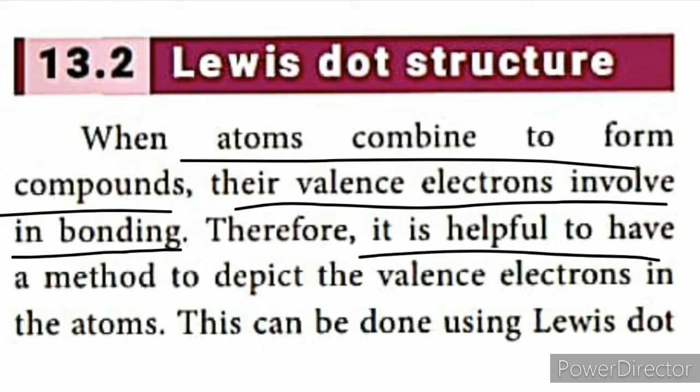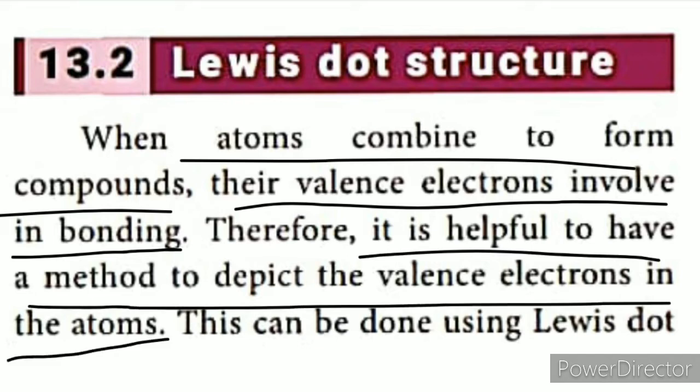It is helpful to have a method to depict the valence electrons in atoms so we can represent them easily. That is the valence electron representation, and from it the chemical bond is formed.